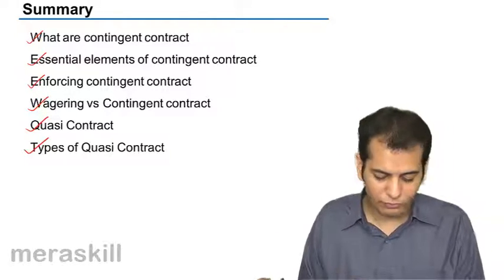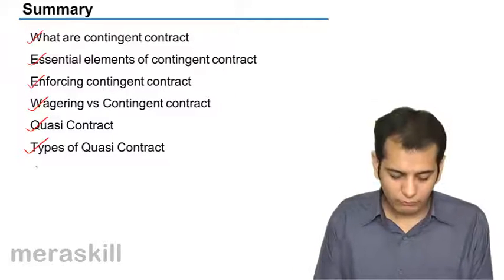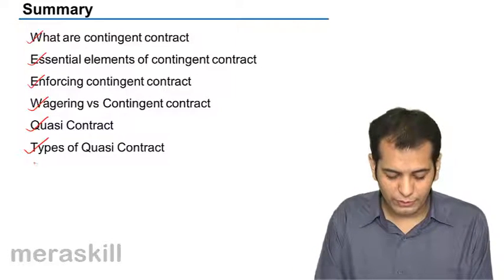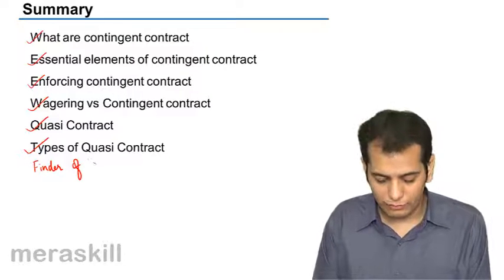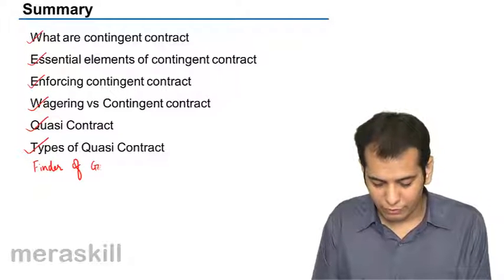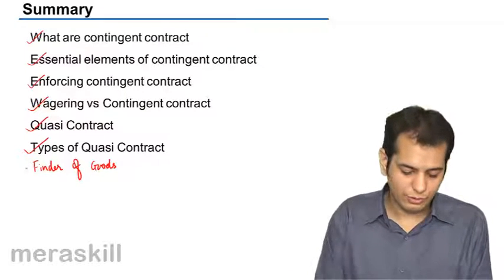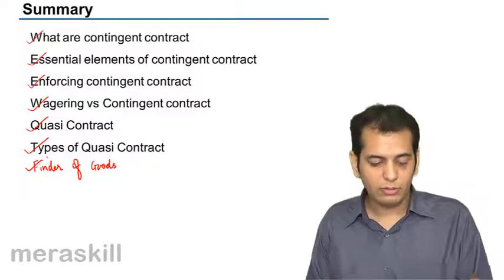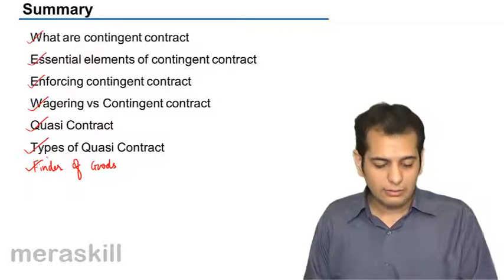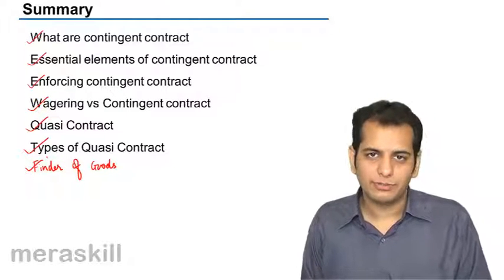Then we saw the types of quasi-contracts. We also covered the duties and rights of the finder of goods. So in all, seven topics we have done in this chapter.